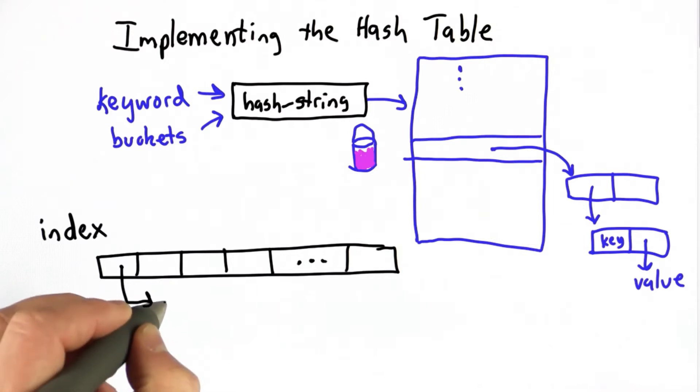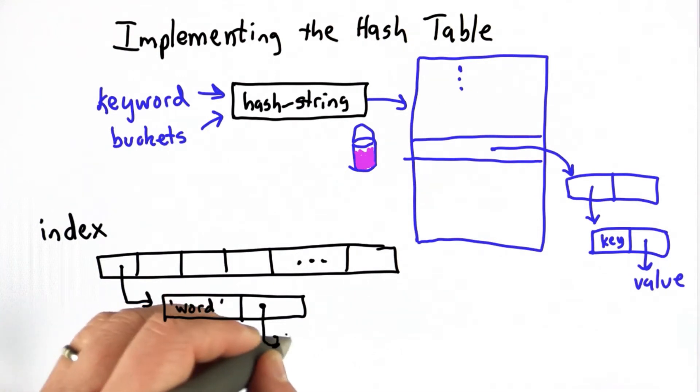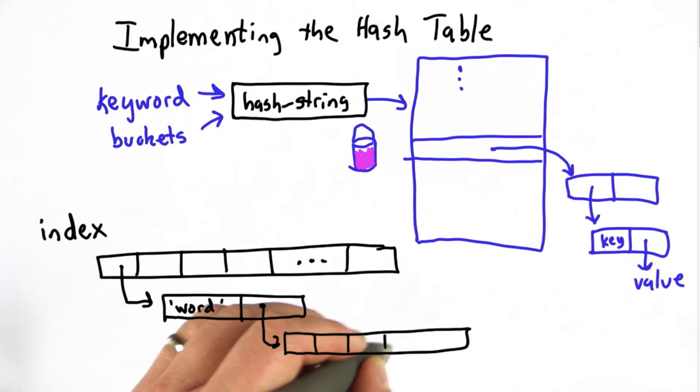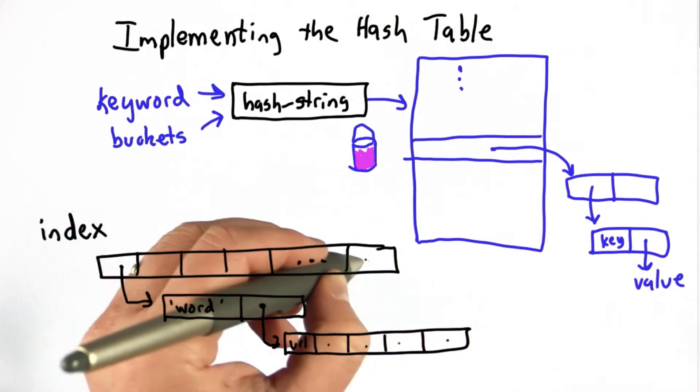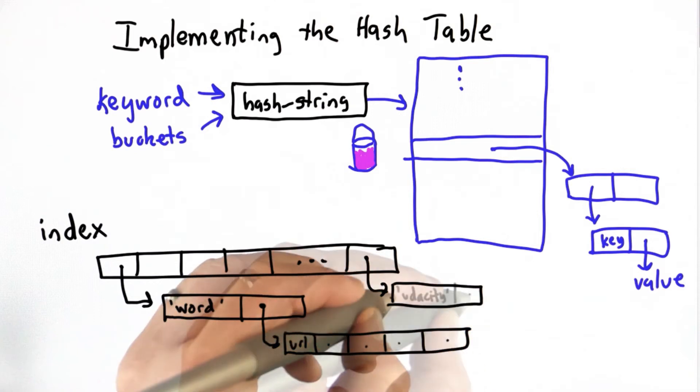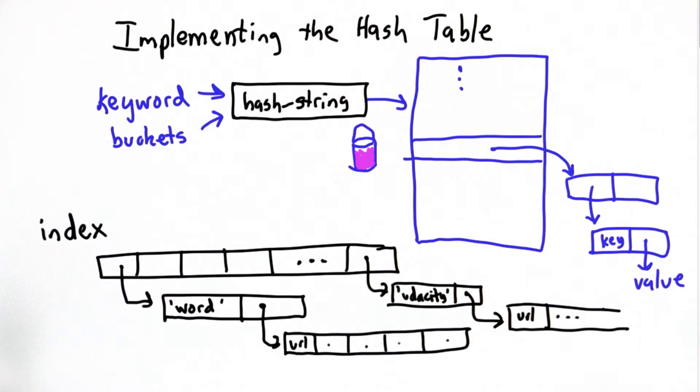The pair was a keyword, and the second element was a list of the URLs where that word appears. We would have each word in the index as its own entry with its own list of URLs. This was the data structure we used last class.